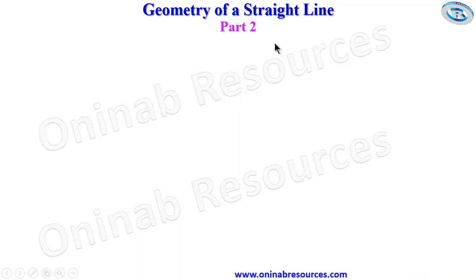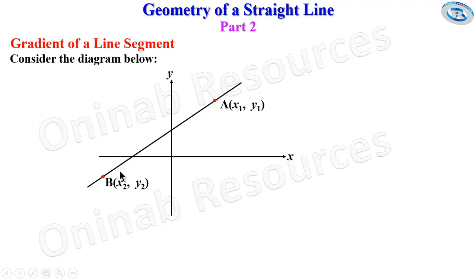In this tutorial we'll be looking at gradient of a line segment. We have a line AB here with the coordinates of point A being x1, y1 and coordinates of point B being x2, y2.